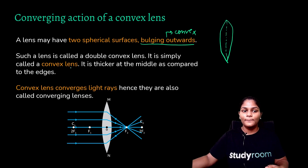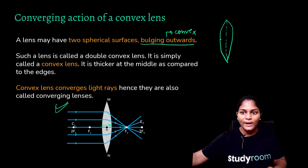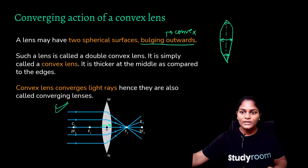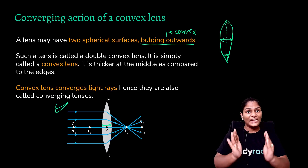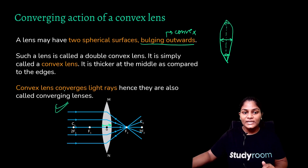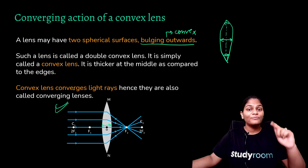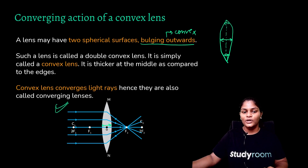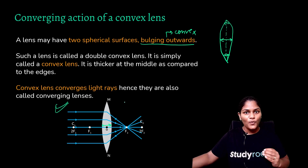Such a lens is called a double convex lens — 'double' because both surfaces are spherical. If one surface were plain it would be a plano-convex lens. The double convex lens is thicker at the middle compared to the edges — it kind of tapers at the ends and is wide in the middle, like a boat shape. Convex lenses converge light rays, hence they are also called converging lenses. When rays are coming from infinity parallel to each other, the action of the convex lens converges them to meet at the focus point.